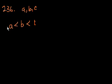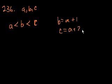Problem 236. If a, b, and c are consecutive positive integers, and a is less than b, which is less than c, which of the following must be true? Consecutive positive. So we could say that b would be equal to a plus 1, and c would be equal to a plus 2, or b plus 1. And of course, a is equal to a. I don't know if that helps. I just felt like writing that down.